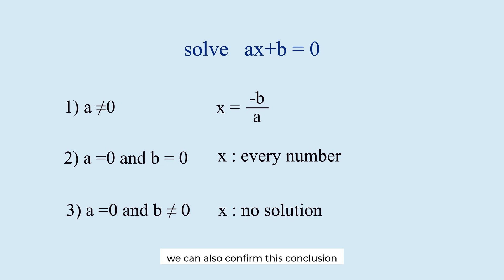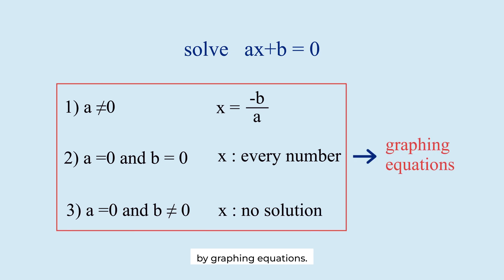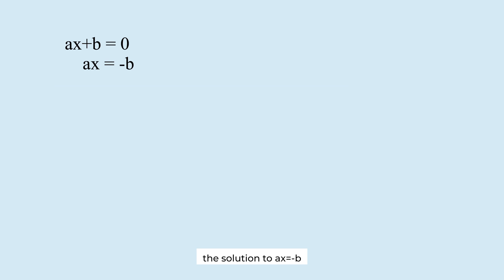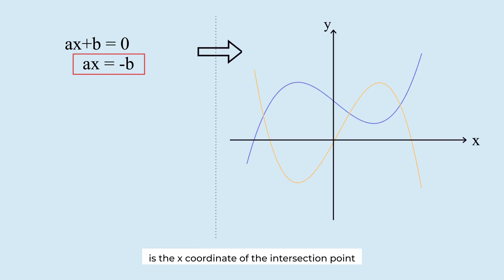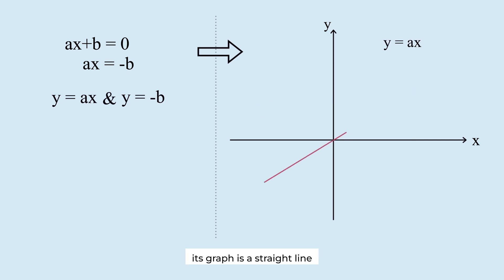We can also confirm this conclusion by graphing equations. The solution to ax equals minus b is the x-coordinate of the intersection point between the graphs of y equals ax and y equals minus b. Since y equals ax is a linear equation, each graph is a straight line passing through the origin.